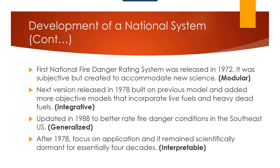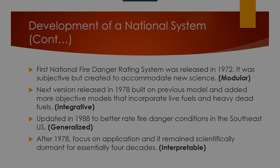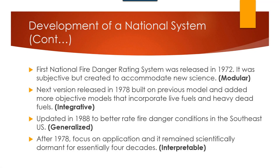In 1988, Bob Bergen and others modified the fire danger rating system so that it would work better in the southeastern United States, but really what it did is identify the need for this system to be generalized such that the same system can be applied across the entire country and adapted locally — but really the core works anywhere. After 1978 we really focused primarily on the application of fire danger and it remained essentially scientifically dormant for about four decades.